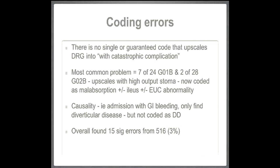Another thing that became clear — which we now emphasise when teaching about DRGs — is causality. When somebody gets admitted with a gastrointestinal bleed and we find it's due to diverticular disease but we didn't mention it, it can upscale or downscale the DRG. So it was pretty important. Overall, I found 15% significant errors, which I thought was about 3%. Leanne, who's much more particular than me, recoded all of those herself and thought there was up to a 10% error rate, though I was a little more forgiving.